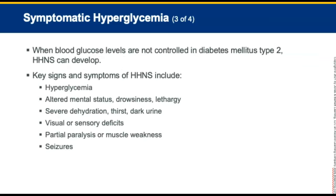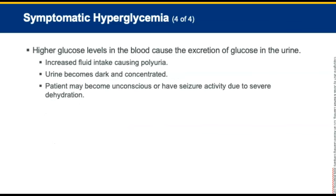When blood glucose levels are not controlled in type 2 diabetes, a condition known as hyperosmolar hyperglycemic non-ketotic syndrome, or HHNS, can develop. Key signs and symptoms of HHNS include hyperglycemia, altered mental status, drowsiness, lethargy, severe dehydration, thirst, dark urine, visual and sensory defects, partial paralysis or muscle weakness, and perhaps seizures. Higher glucose levels in the blood cause excretion of glucose into the urine, so patients respond by increasing fluid intake, which causes polyuria. In HHNS, the patient cannot drink enough fluid to keep up with the exceedingly high glucose levels. Urine becomes dark and concentrated, and the patient may become unconscious or have seizure activity due to severe dehydration.